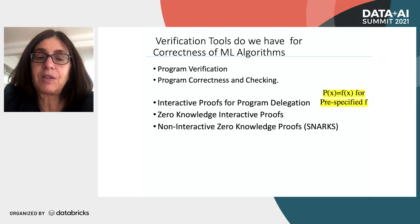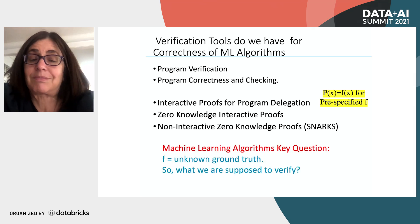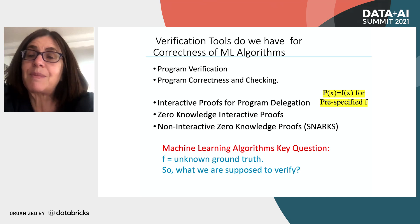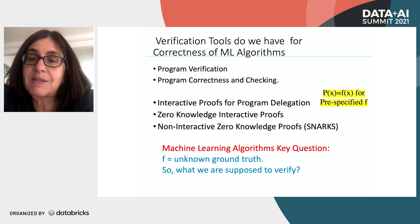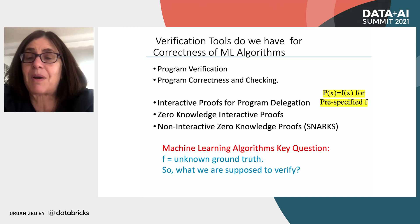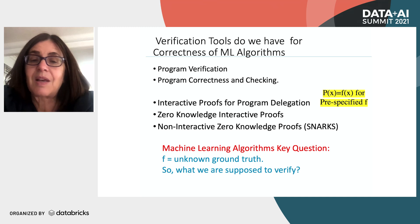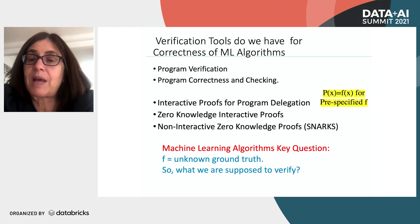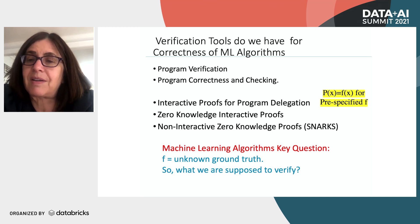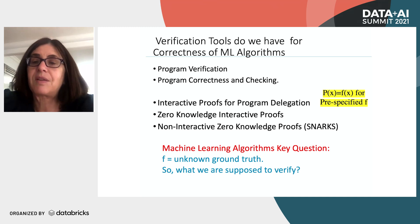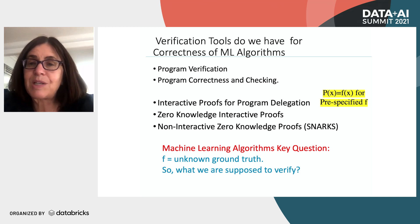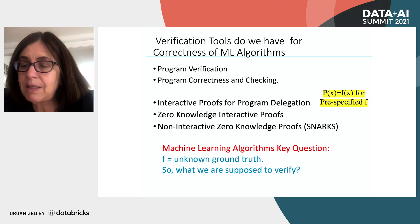The thing about machine learning is there is no specified function — we're learning from the data. Nobody told us the rules; they gave us data and asked us to come up with a hypothesis that agrees as best as possible. So said differently, we don't really know what the ground truth F is. We're supposed to verify that this risk assessment ML program agrees with the data, and we need a formal definition of what that means.